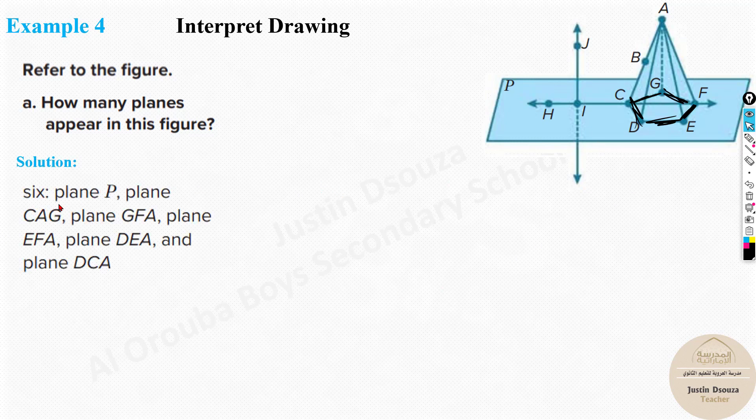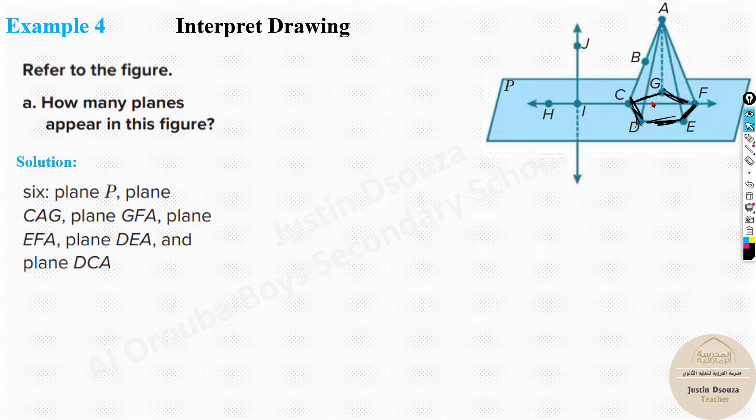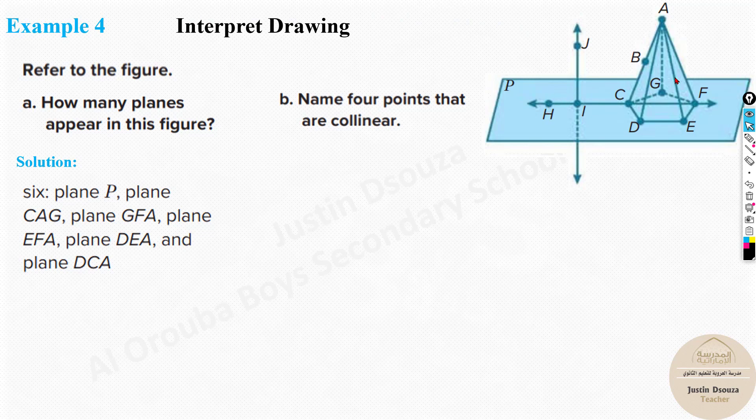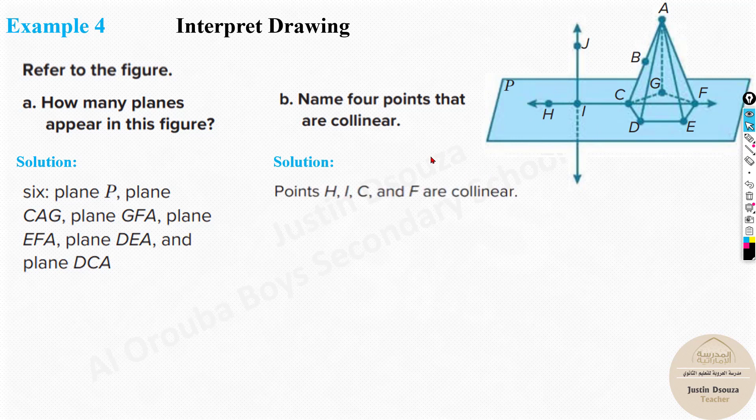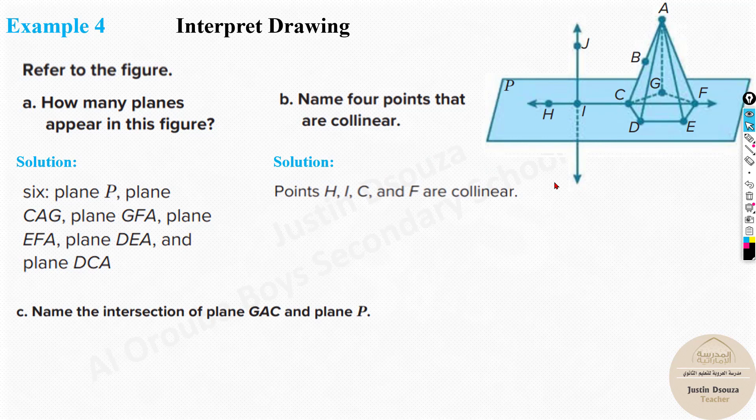And these are the planes. So how do you write the plane? See, one is plane P. Yes. Then you write it as D, A, E, E, A, F, F, A, G. You can write in your own. And name four points that are collinear. So now let's see where is collinear points. Now see, this has only two points. So I can't take. Whereas H, I, C, and F. There are four points on the same line. So I'll consider that. H, I, C, F. Because there are no other lines with four points on it.